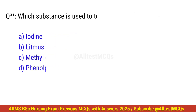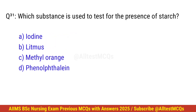Question number 31. Which substance is used to test for the presence of starch? Correct option is A. Iodine.